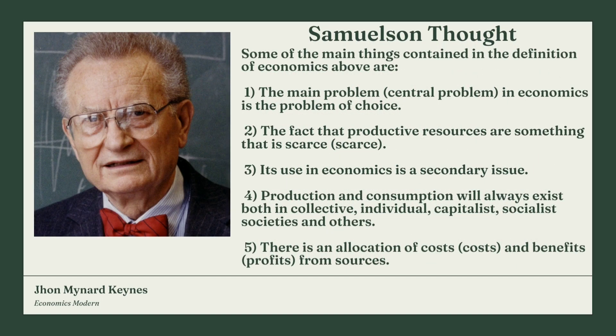Number one: the main or central problem in economics is the problem of choice. Number two: the fact that productive resources are something that is scarce. Number three: each use in economics has an opportunity cost as a secondary issue. Number four: production and consumption will always exist in collective, individual, capitalist, socialist societies, and others, plus there is an allocation of cost and benefit or profit from resources.